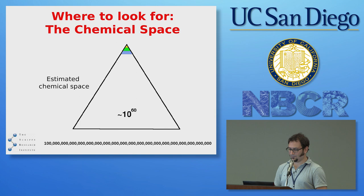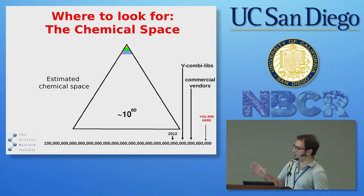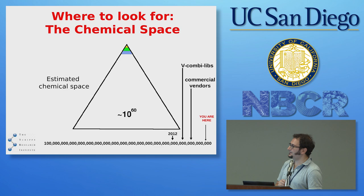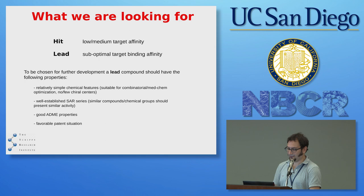The whole possible space of virtual combinatorial libraries is even higher — billions of molecules — but this is just the tip of the iceberg. The estimated chemical space is 10 to the 60 possible molecules. The largest virtual screening ever done, in 2012, only reached a fraction of that. It's easy to understand that you can't explore this space systematically, so you need to find shortcuts.